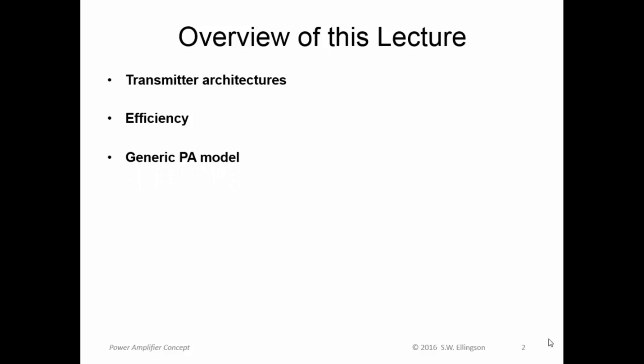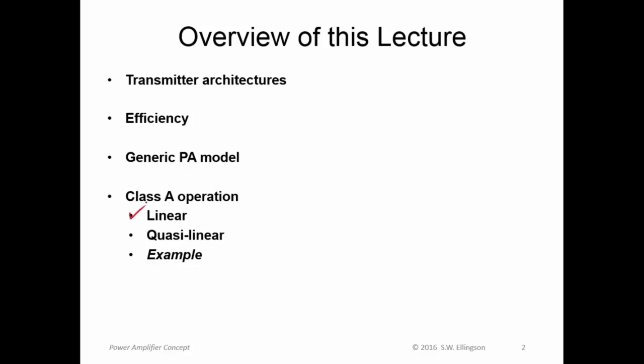We'll talk about a generic model for power amplifier analysis, and then we'll talk about class A operation. Power amplifiers can be specified as operating in a range of classes. Class A is the simplest one, the one you're probably already familiar with — known as linear operation, or quasi-linear operation. And finally, we'll talk about the path forward, which covers all the other possible classes of operation, and the reason they arise, which is efficiency.